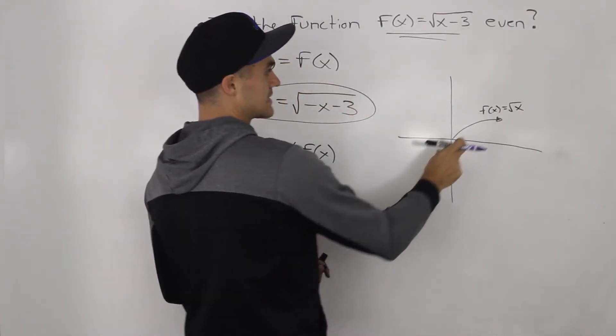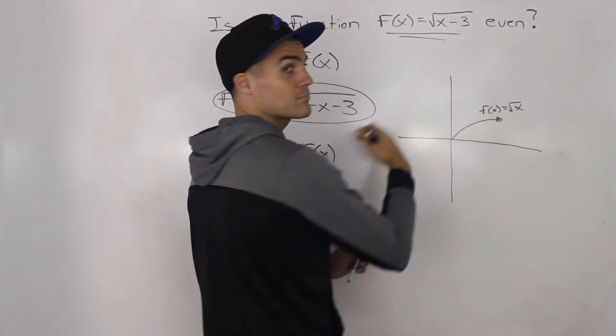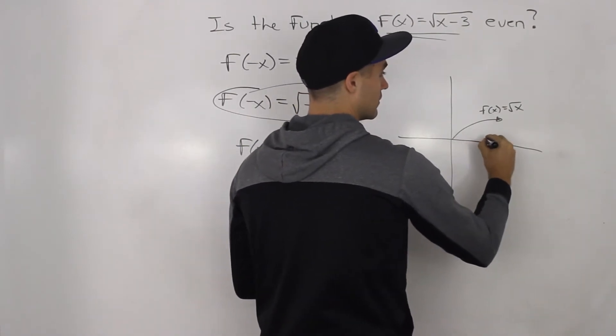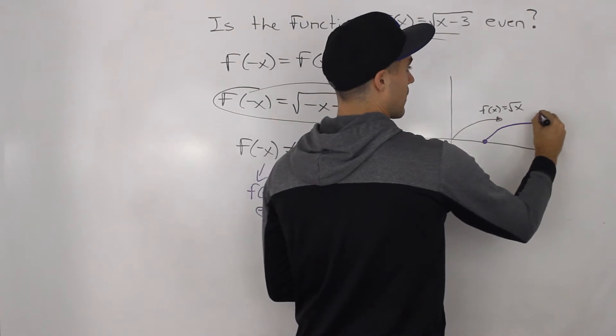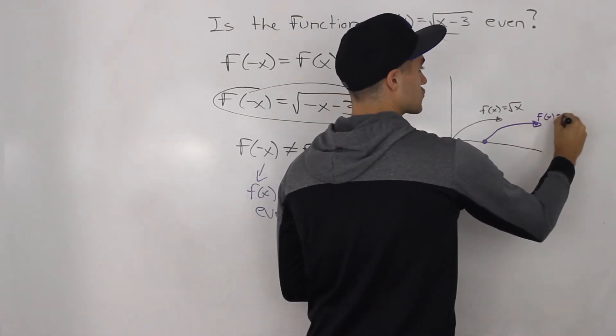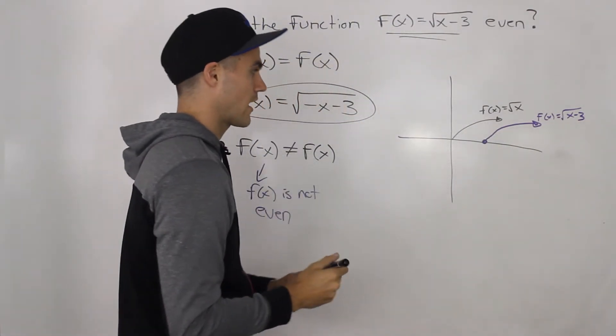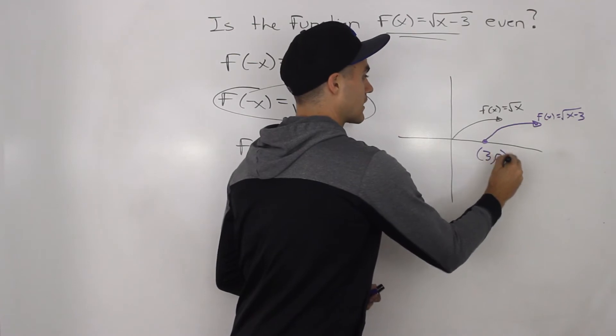So what happens is, in this case, we're just taking the square root of x and we're shifting it by 3 to the right. So that would be here. So this is how f of x equals the square root of x minus 3 looks like. It's just a simple graph. And then this point here is at 3 and 0.